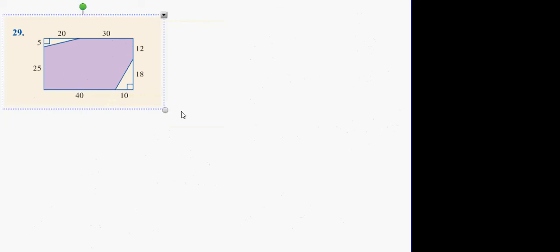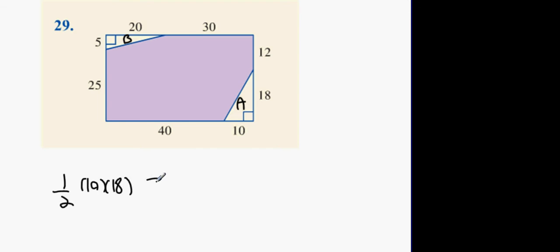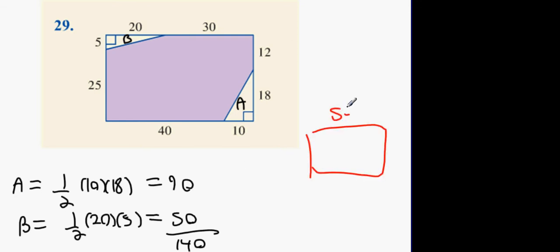Now the last one, number 29. You get the small triangles. Triangle A is a half 10 times 18, which is 90. Triangle B, it's going to be a half 20 times 5, which is 50. They equal 140 when combined. What's the area of the entire rectangle then? 50 by 30. According to Joey, that's going to be 1,000. Take away 140. 1,360 meters squared.